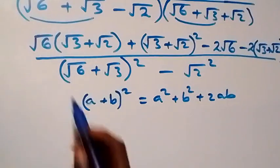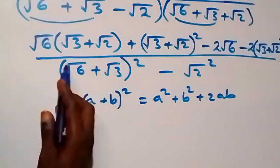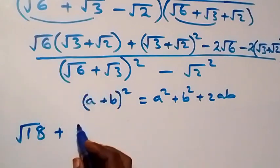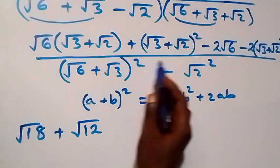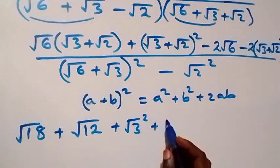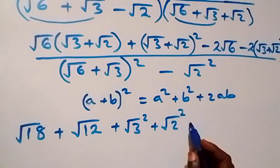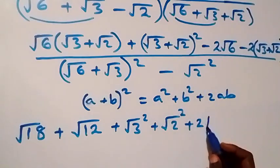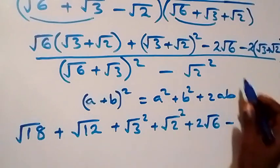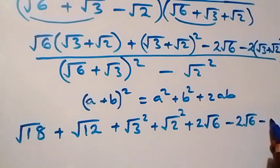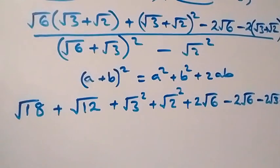In the numerator: √6·√3 = √18, plus √6·√2 = √12. Then expanding (√3 + √2)²: we get √3² + √2² + 2√6. Then minus 2 times (√3 + √2), giving minus 2√3 minus 2√2. This is all divided by the denominator.